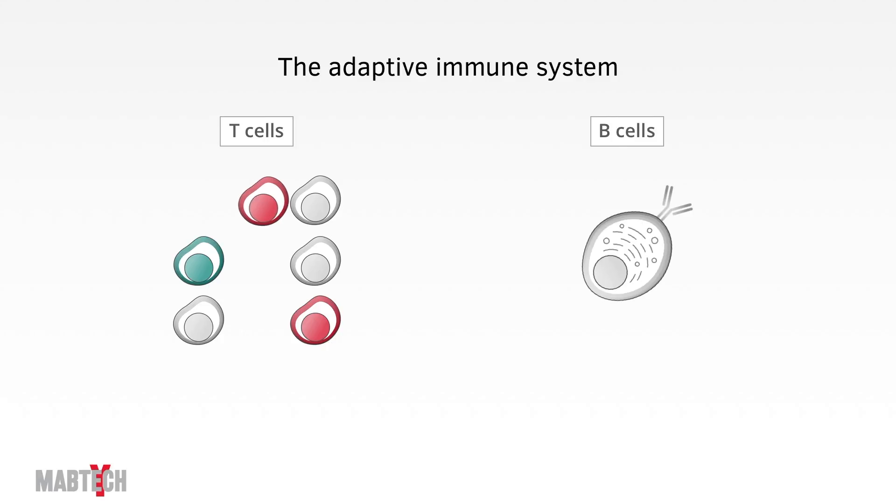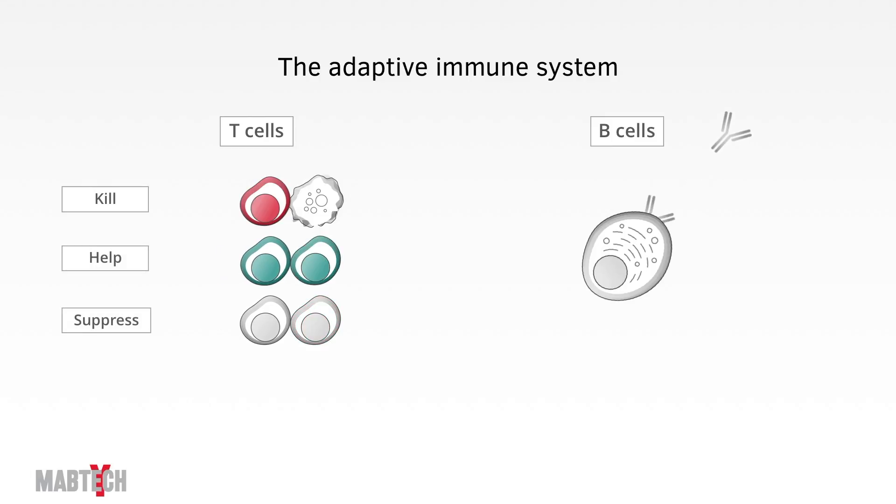Generally, depending on the T-cell, it can kill, help, or suppress other cells. B-cells, on the other hand, produce antibodies that can neutralize pathogens. T-cells and B-cells are both lymphocytes.